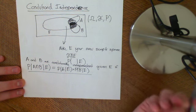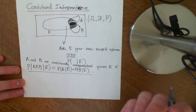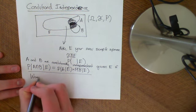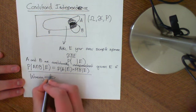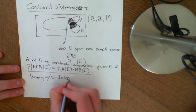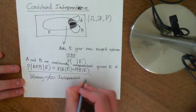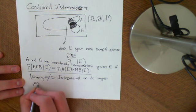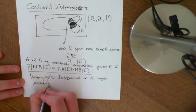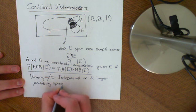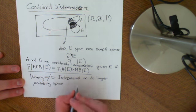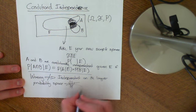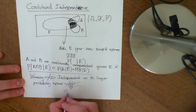A note of warning: this does not imply that they are independent on the larger probability space. It does not imply that they are unconditionally independent. And it doesn't even work the other way either — them being independent on the larger probability space does not tell you that they are conditionally independent.